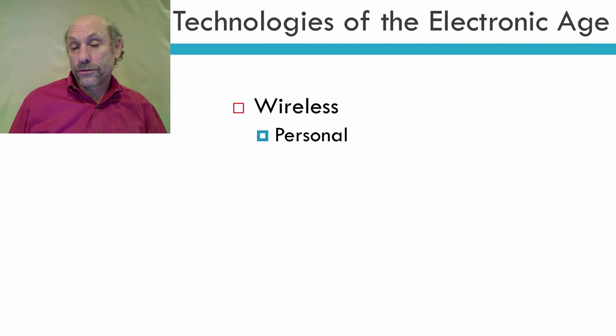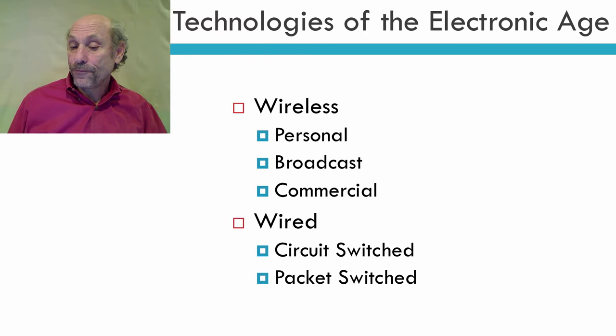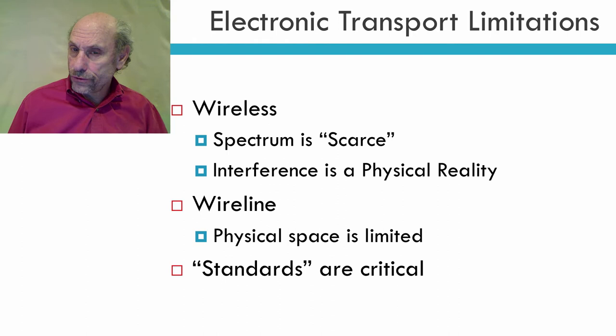Let me talk about just the two technologies of the electronic age. We have wireless, which includes personal uses like ham radio operators or two-way radios, broadcast such as radio and television, and commercial uses like cellular and satellite technology. We also have wired technology — we traditionally had circuit-switched, and now we have packet-switched. These two technologies have certain limitations: in wireless, spectrum is scarce and interference is a physical reality; in wireline, physical space is limited. Standards are critical to electronic transport, and we'll talk more about that as we move forward.